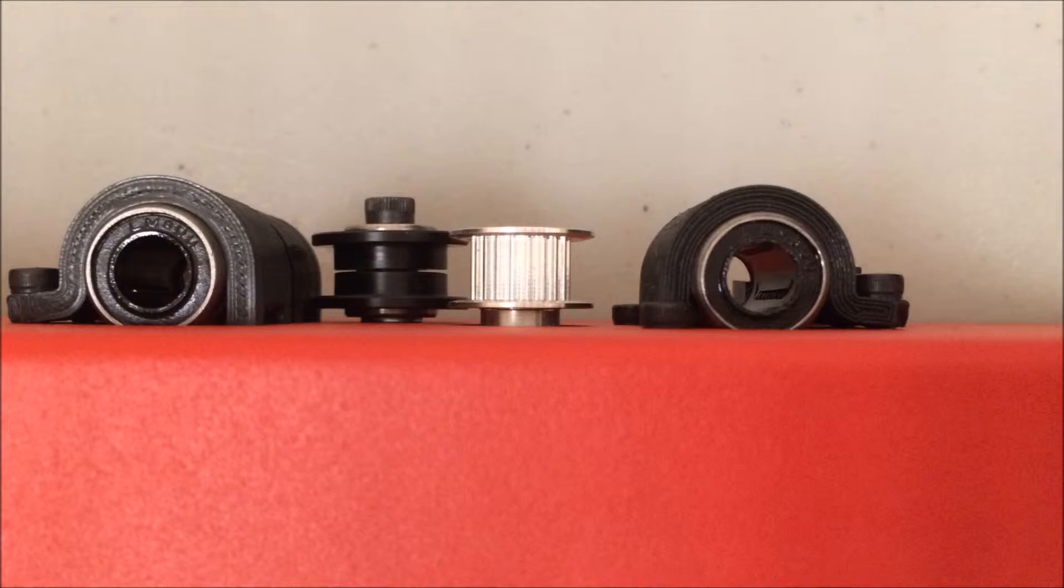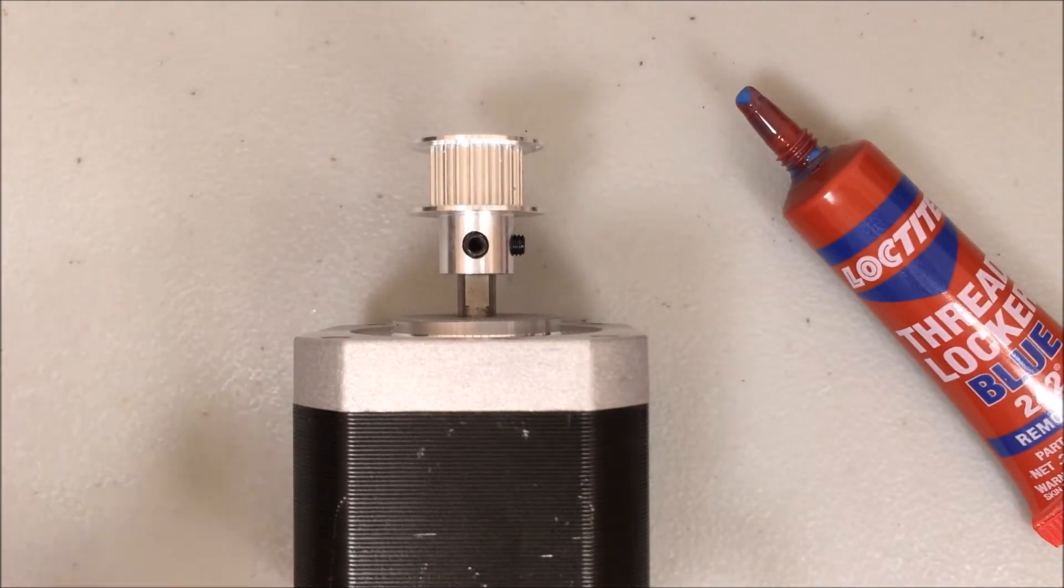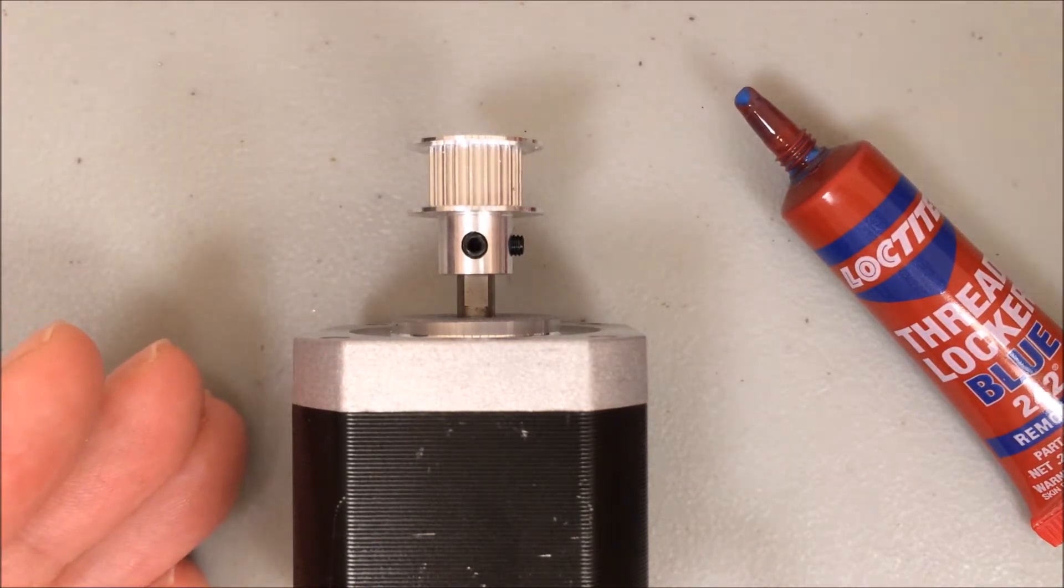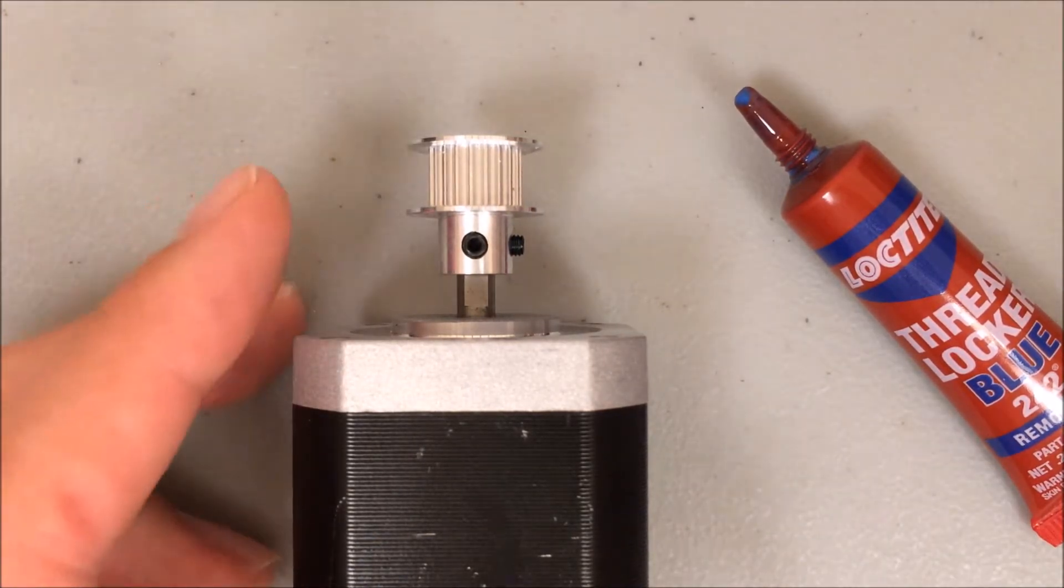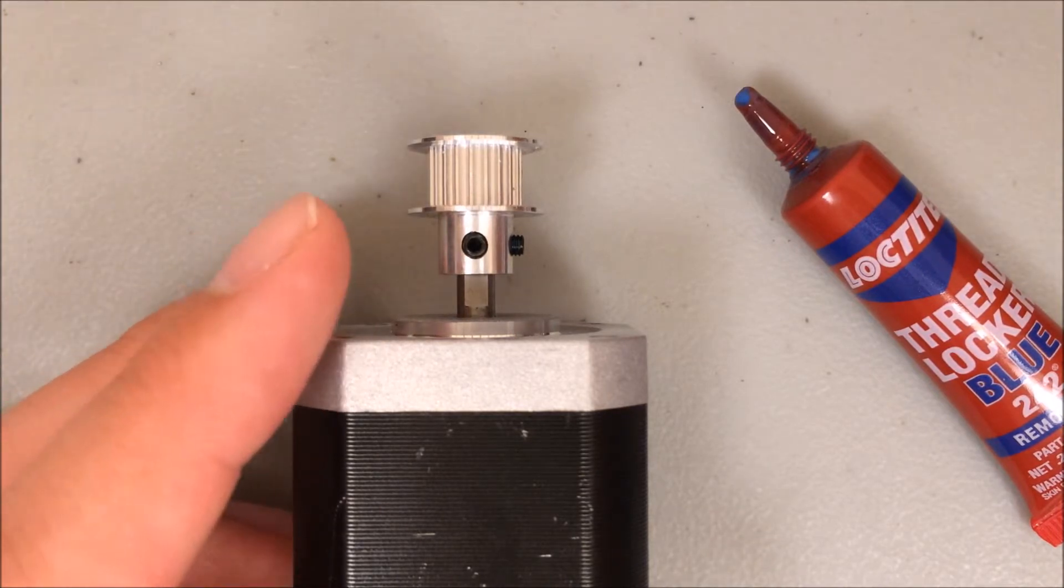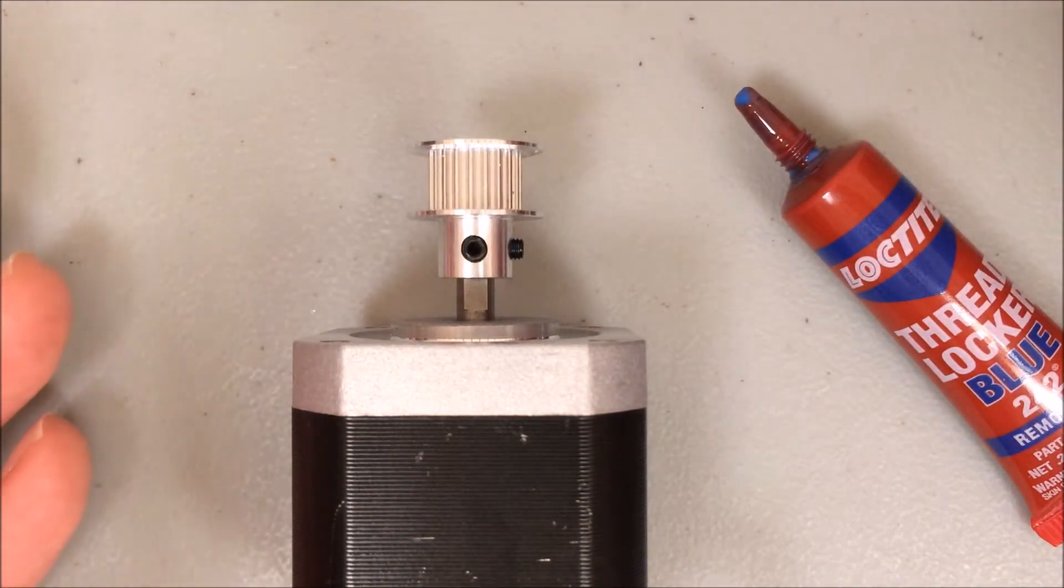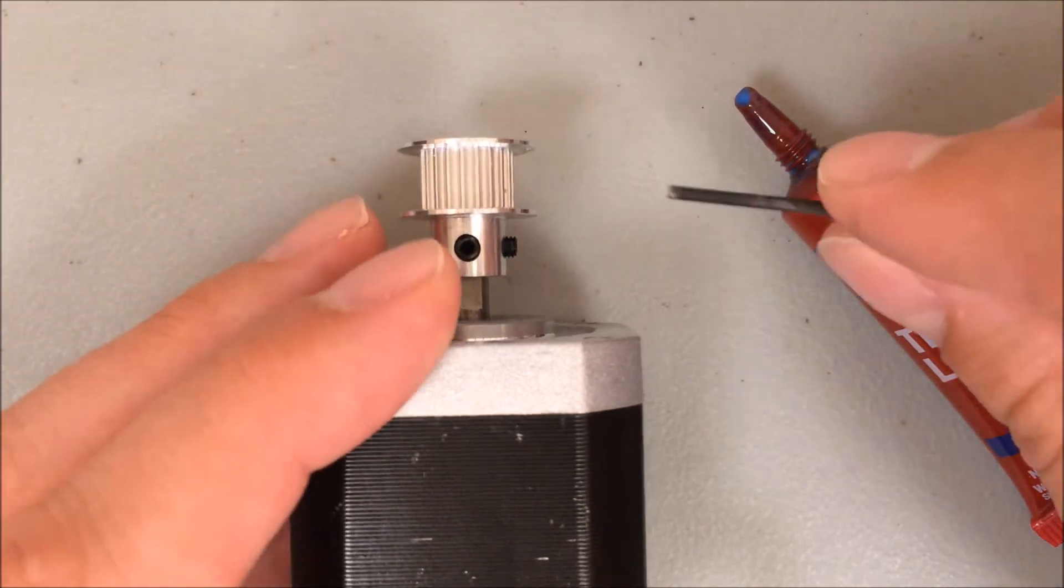If yours don't line up, undo the set screws on the motor shaft and readjust the height of the pulley. Once you have them lined up correctly, you're ready to apply the threadlocker. I have two tricks when I apply threadlocker. One is I like to lay the motor on its side so that if I apply too much threadlocker it drips and falls on the table and not into the motor itself. The other one is I just undo one screw at a time and apply threadlocker while leaving the other screw tightened in place so the pulley doesn't slip.